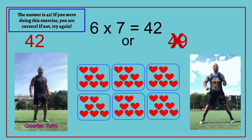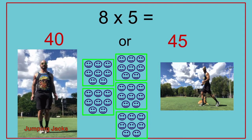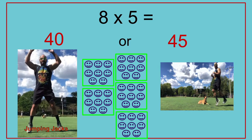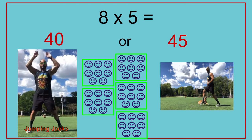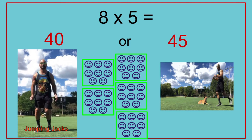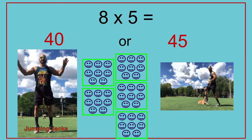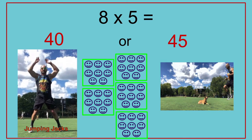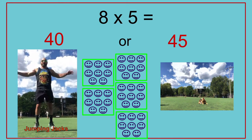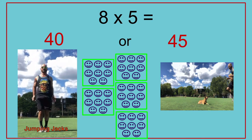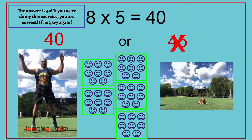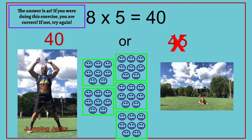8 times 5 equals — 40 or 45? The answer is 40. If you are doing this exercise, you are correct. If not, try again. 8 times 5 equals 40.